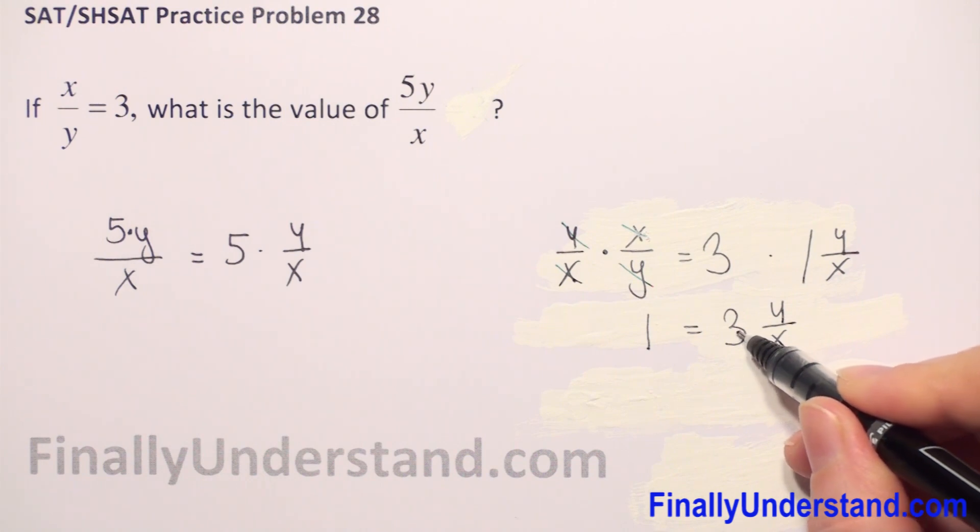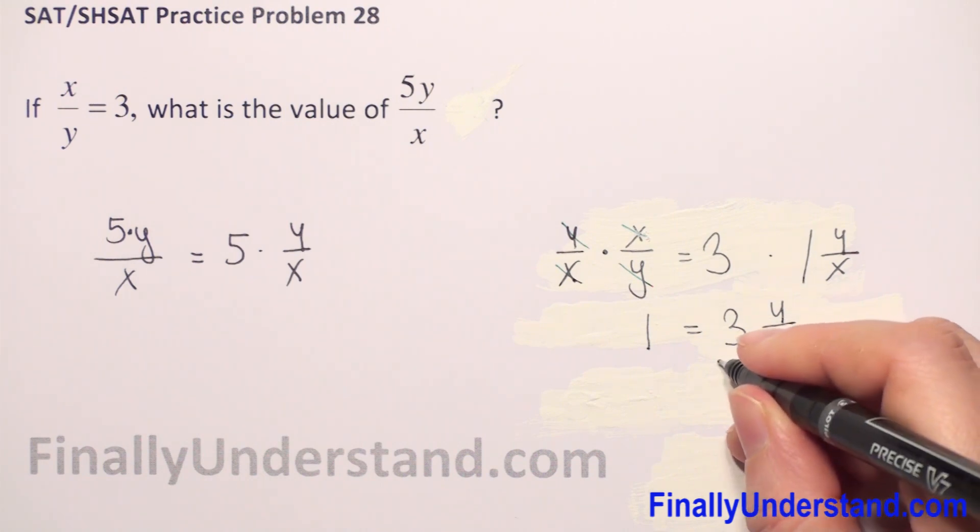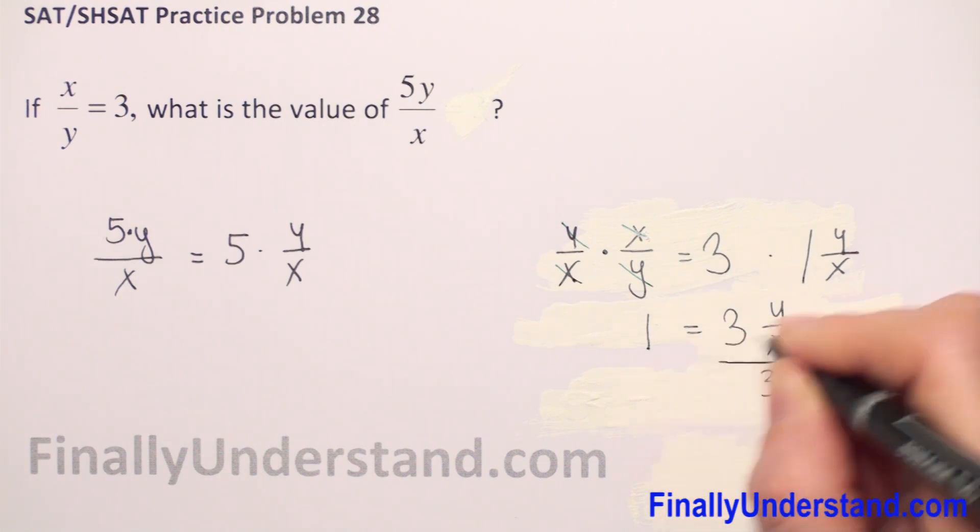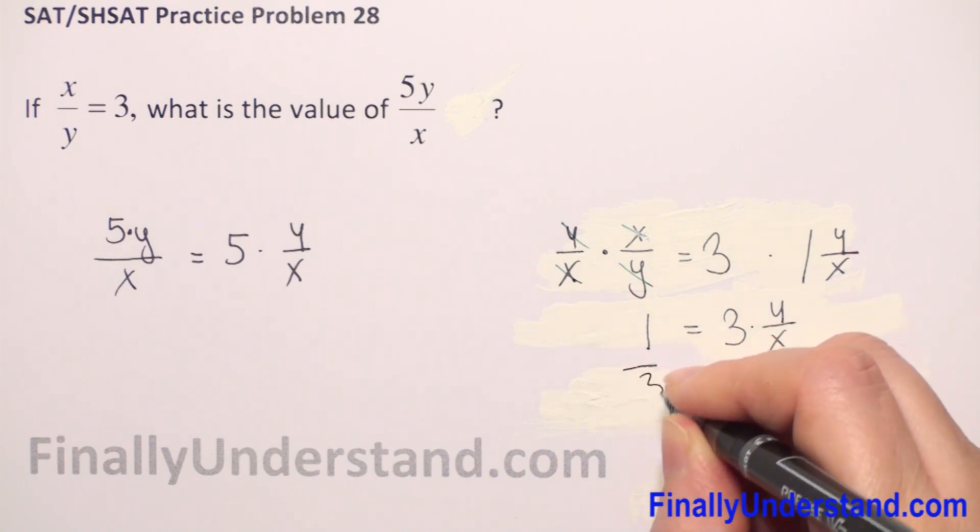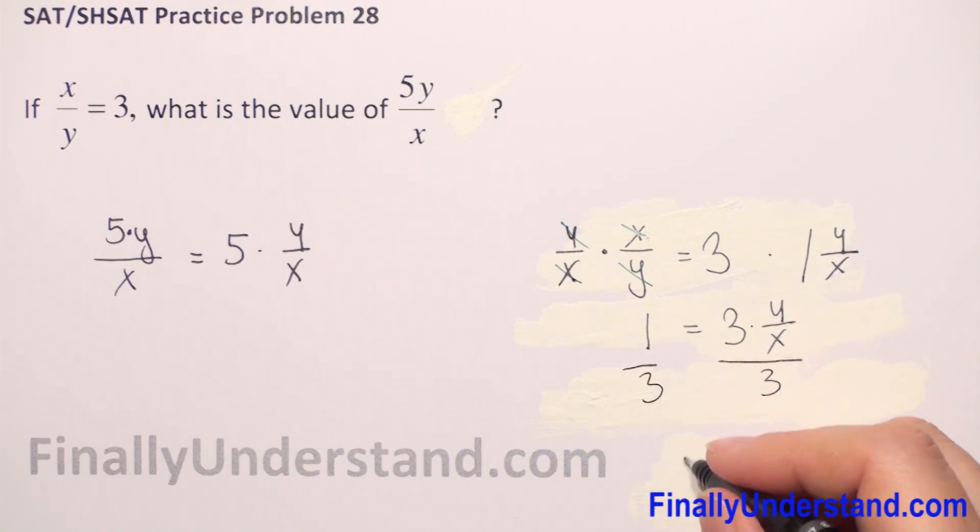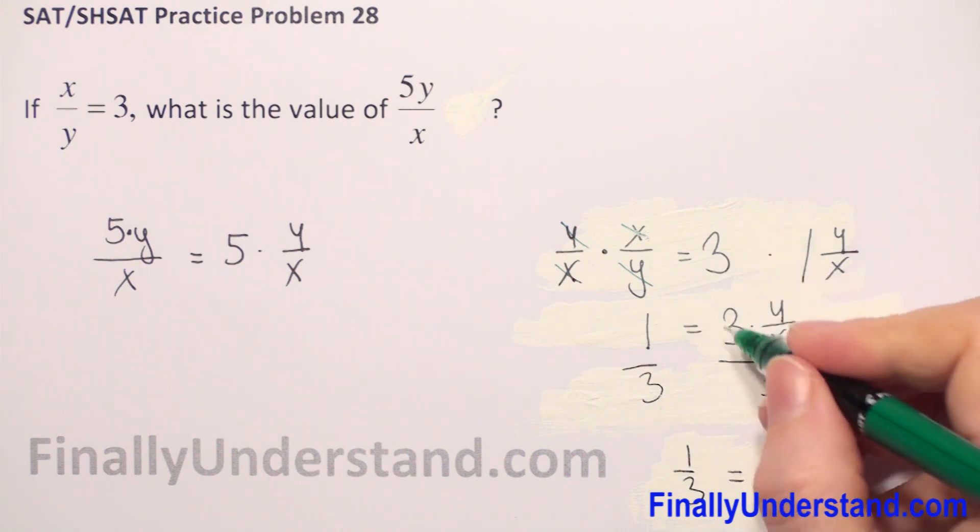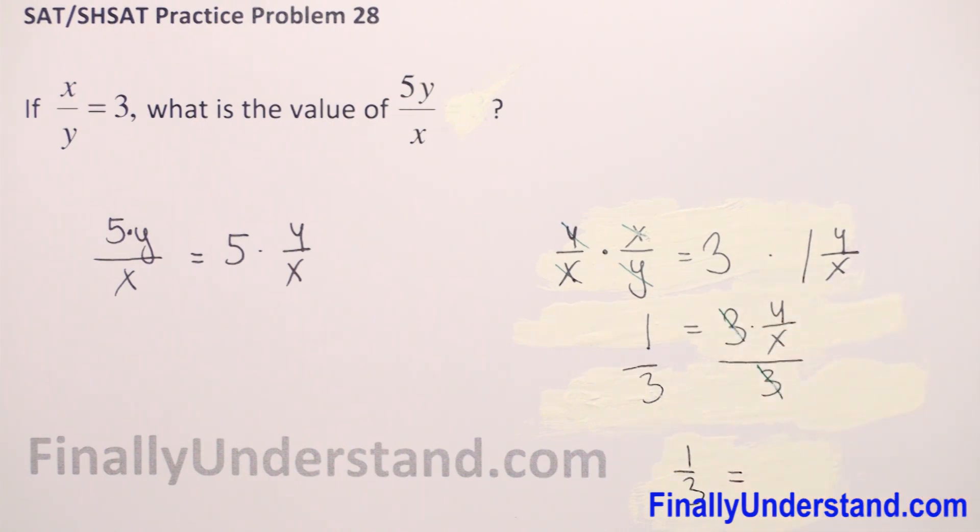but we don't want this 3 here. So I will divide both sides by 3 because we have multiplication here. So we have 1 over 3 is equal to 3 and 3 we can reduce. So we have only y over x, so we find that y over x is 1 third.